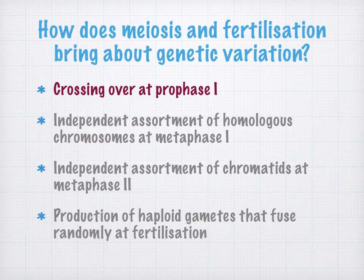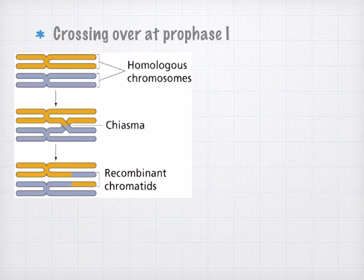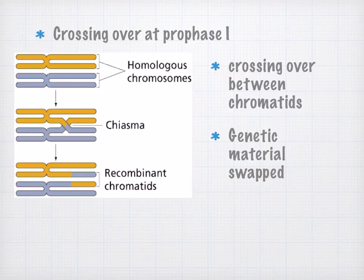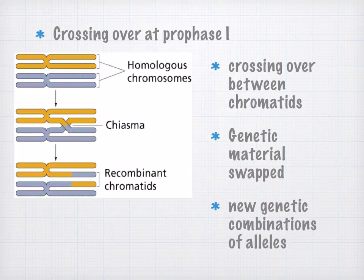Looking at crossing over at prophase I — during prophase I, there's crossing over between the chromatids of homologous chromosomes. This means that genetic material is swapped between the maternal and paternal chromosomes. In this way, new genetic combinations of alleles are produced.